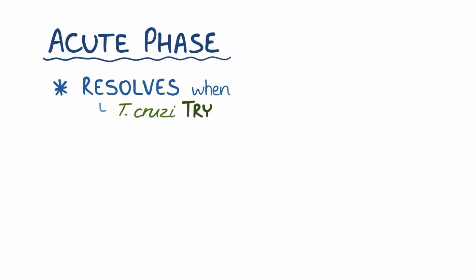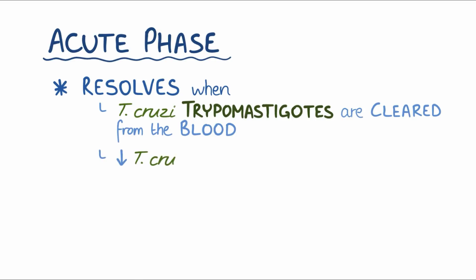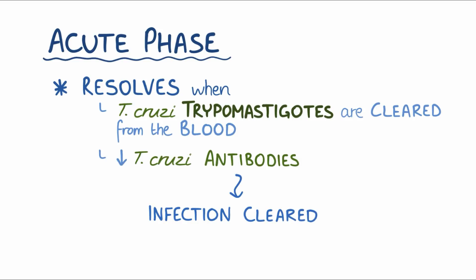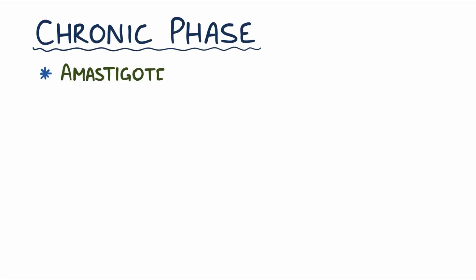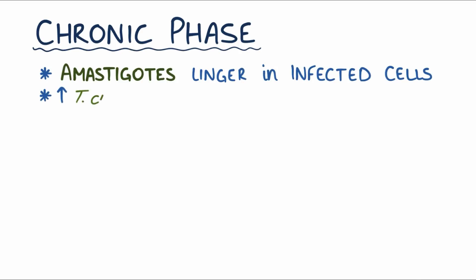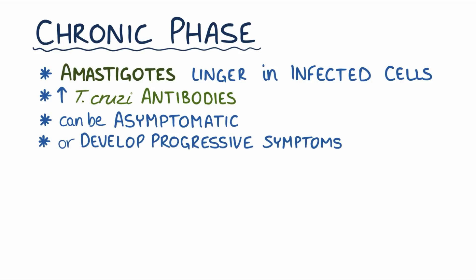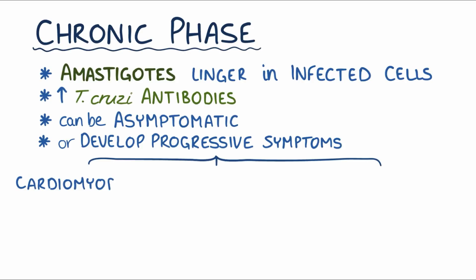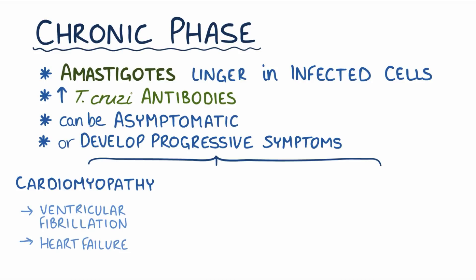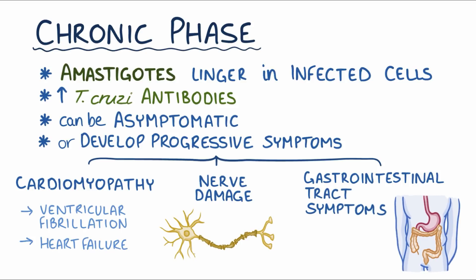The acute phase resolves when T. cruzi tripomastigotes are cleared from the blood, and over time antibodies against T. cruzi gradually decrease, indicating that the infection has been cleared. In some individuals, though, that doesn't happen, and they go on to the chronic phase of the infection. In the chronic phase, amastigotes linger in infected cells, and there are elevated levels of T. cruzi antibodies even though tripomastigotes aren't usually in the blood. The chronic phase can be asymptomatic, but some individuals develop progressive symptoms like nerve and muscle damage. The most notable symptom is cardiomyopathy, where the heart gets really large, which causes arrhythmias like ventricular fibrillation and heart failure. There can also be nerve damage and gastrointestinal tract symptoms like enlargement of the esophagus and colon, called megaesophagus and megacolon.